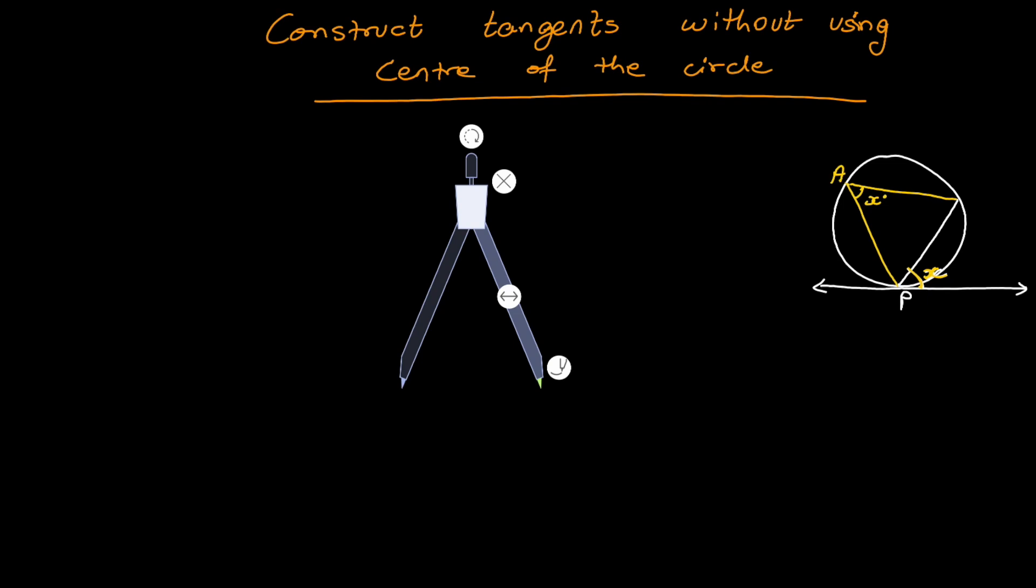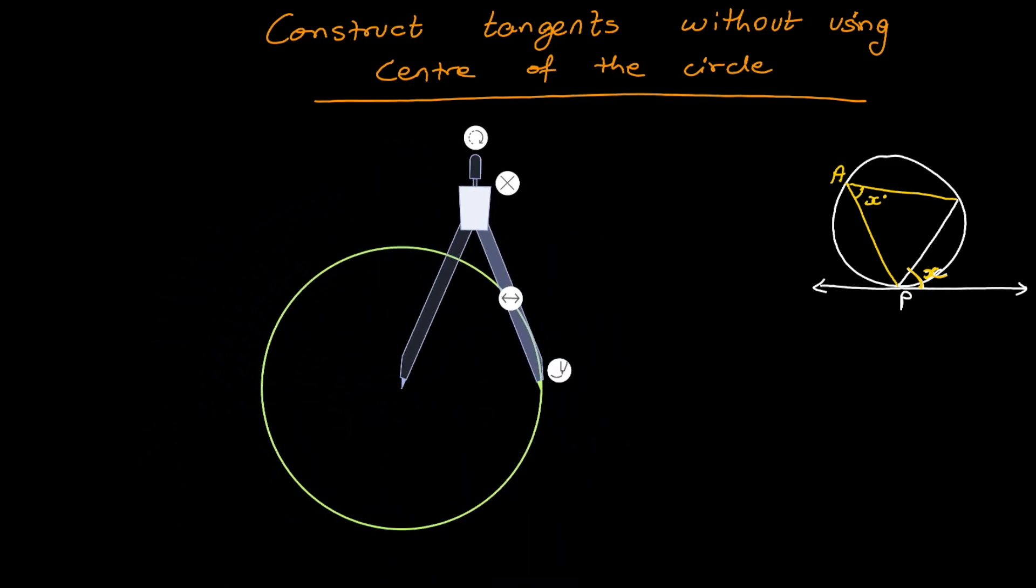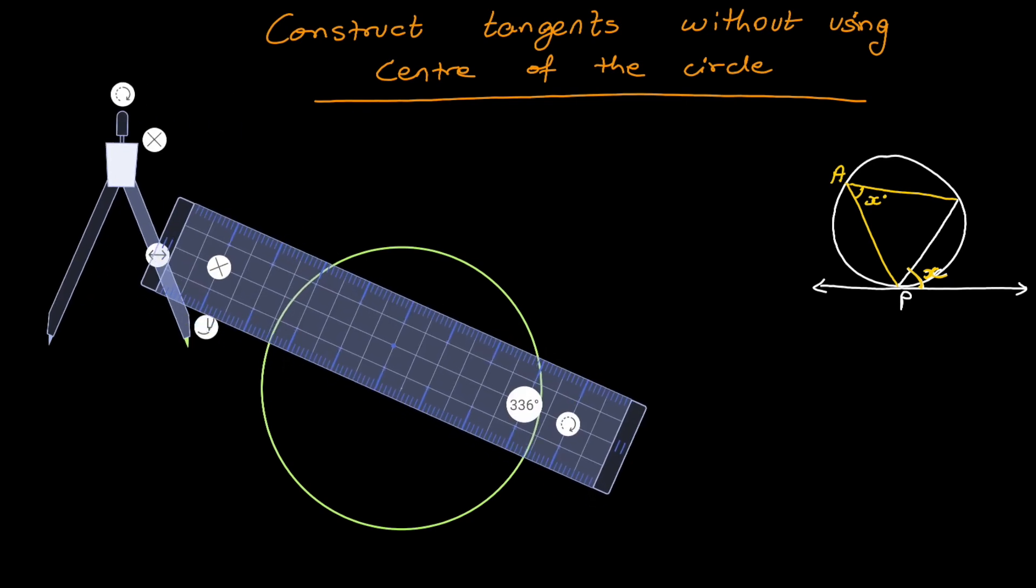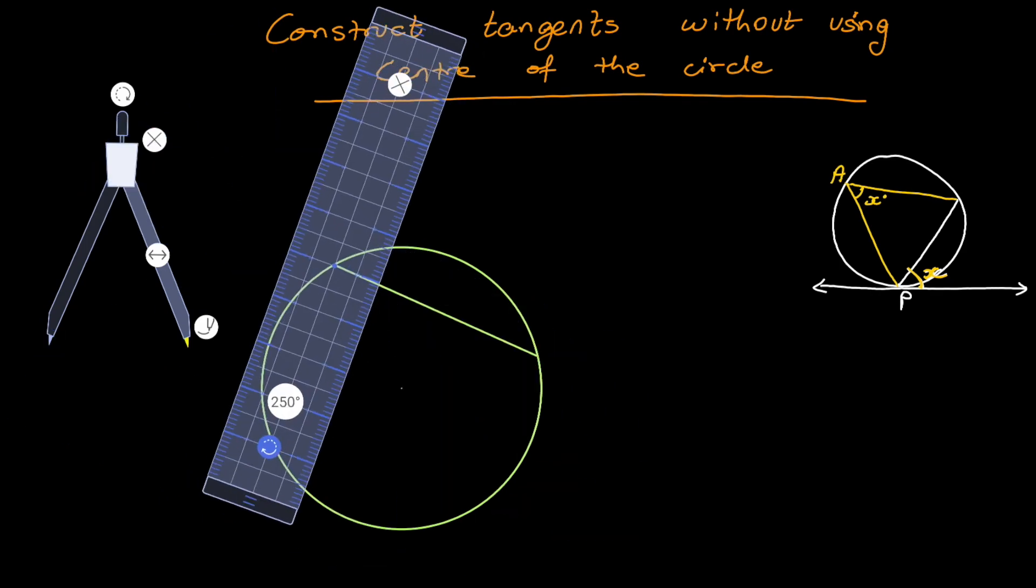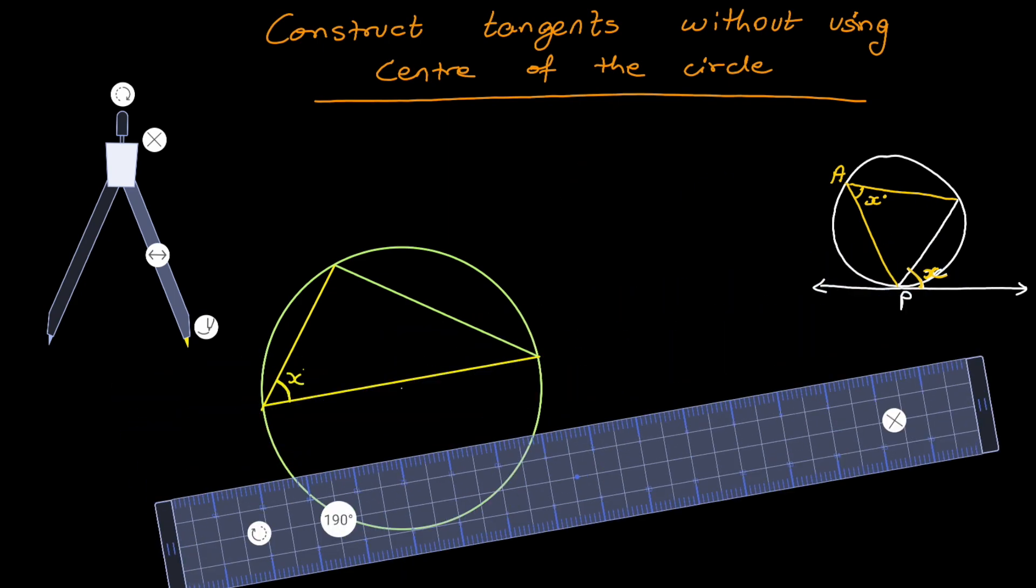You draw a circle of any radius, but without using the center, you just make a chord. So first you will make the angle in alternate segment. Now, make this angle with the chord outside the circle.